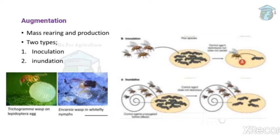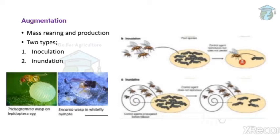Next is augmentation, which means mass rearing and production. It has two types: inoculation and inundation. Inoculation means releasing natural enemies in a small number. Over time, their population increases on its own and they control the pest. The pest population does not decrease quickly. For example, if a field has 1,000 pests and we release only 50 natural enemies via inoculation, it will take time for natural enemies to increase and destroy the pest population.